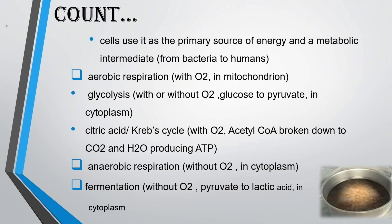Aerobic respiration (with O2) occurs in the mitochondrion. Glycolysis, which can occur with or without O2, converts glucose to pyruvate in the cytoplasm. The citric acid (Krebs) cycle then follows, where acetyl-CoA is broken down to CO2 and H2O, producing ATP.